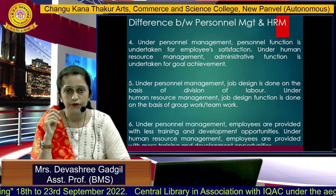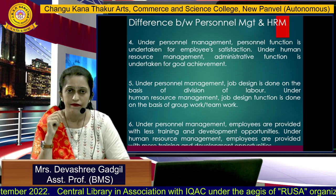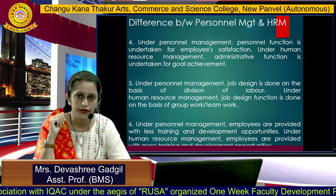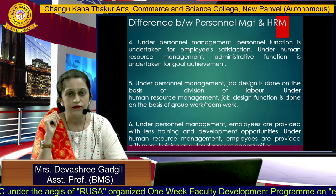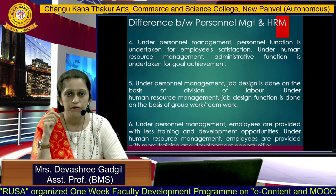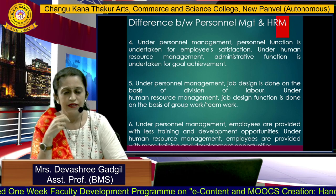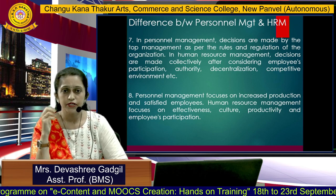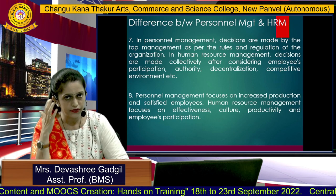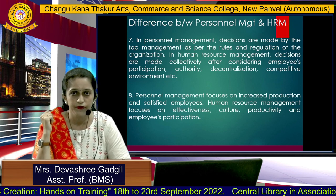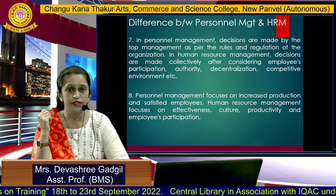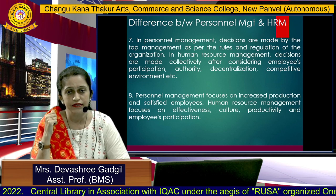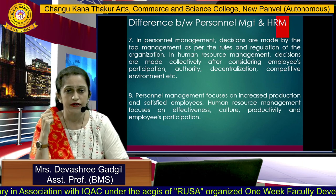Personal management is a personal function undertaken for employee satisfaction, whereas HRM is more about administrative functions for achievement of goals. In personal management, job design is done on the basis of division of labor, whereas in HRM it is done on the basis of group work or teamwork. In personal management, employees are provided less training and development opportunities, whereas in HRM more training and development opportunities are given. In personal management, decisions are taken by top-level management, whereas in HRM collective decisions are taken with employee participation and decentralization. Personal management focuses on increased production and satisfied employees, whereas HRM focuses on effectiveness, culture, productivity, and employee participation.